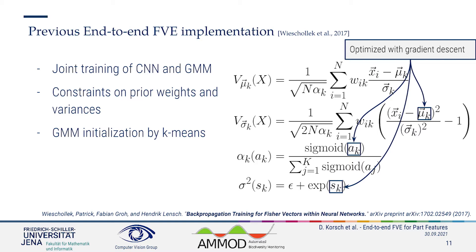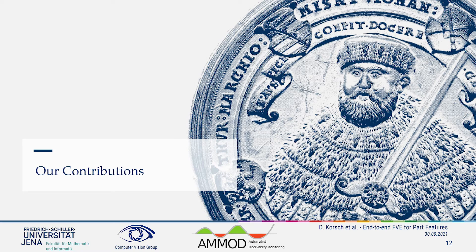On the other hand, in our opinion, the estimation of the parameters with stochastic gradient descent violates the definition of Fischer vector encoding. Actually, it is based on a generative model, but we don't have any certainty that the parameters estimated in this way actually describe the input features properly. Hence, we propose in our paper an alternative way of estimating the GMM parameters.